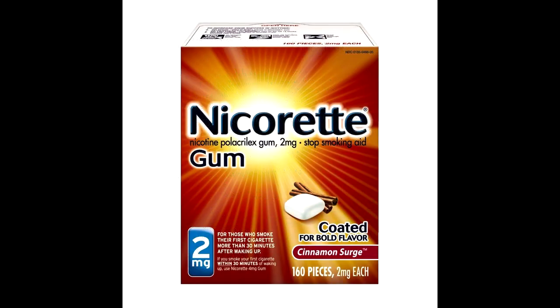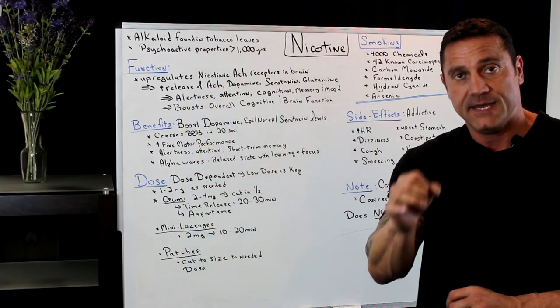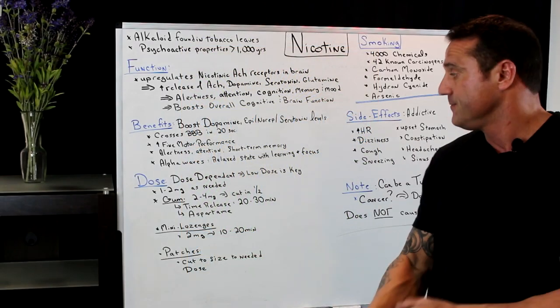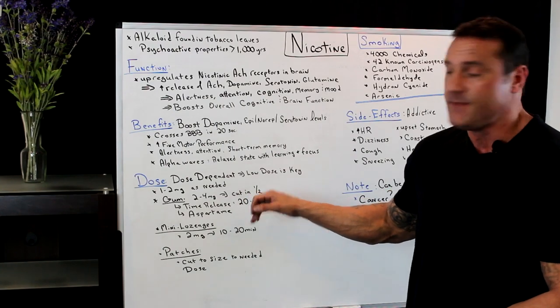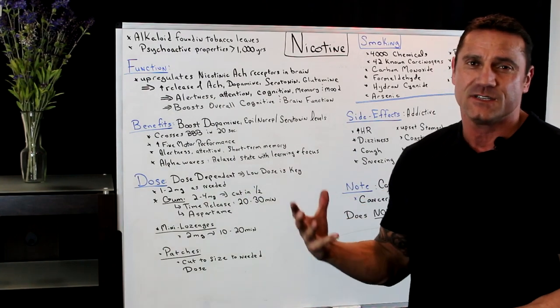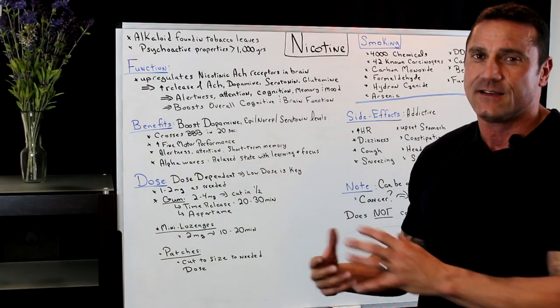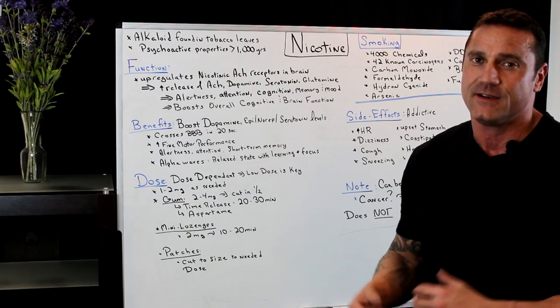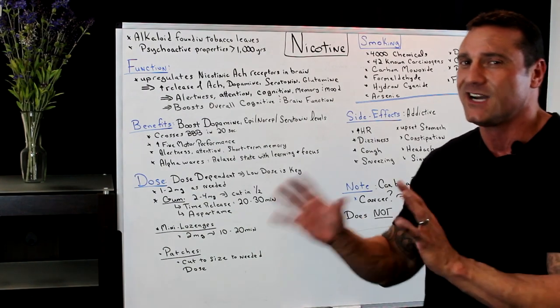Now the gum, it comes in about anywhere from two to four milligram pieces of gum. So you want to break that in half. The time release is 20 to 30 minutes. And the thing about the gum, which is harmful about the gum is that it contains a lot of other chemicals and ingredients that are bad for you, particularly aspartame. So you want to watch out for the gum.